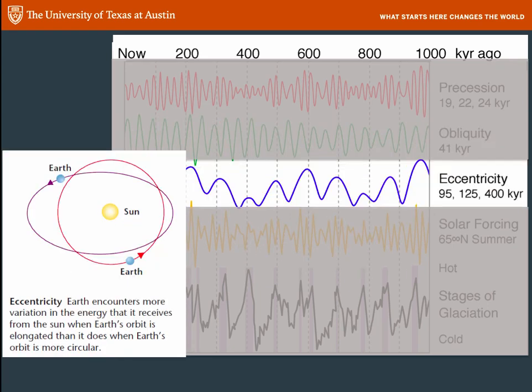Now, the third one we call eccentricity, but it has to do with the shape of the Earth's orbit. You probably have heard that the Earth's orbit is elliptical, and it is. It's often drawn in a very exaggerated way, like it is here in purple. The amount of ellipticity is actually pretty small, but it is in fact measurable and well-known.